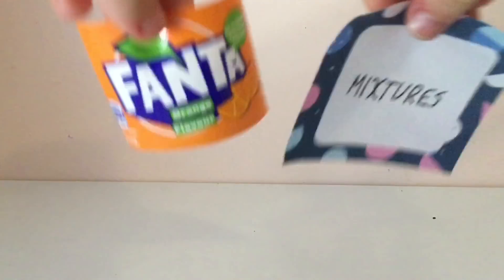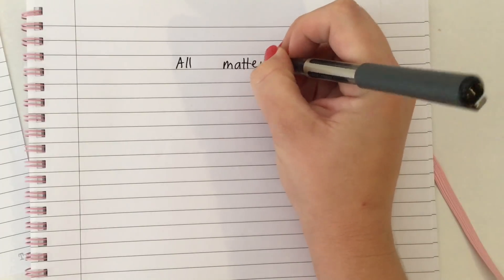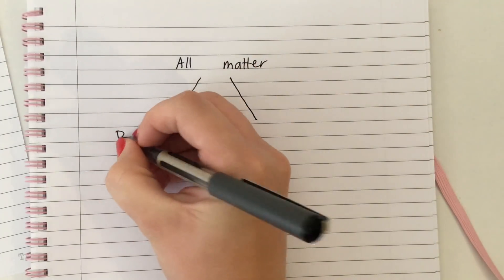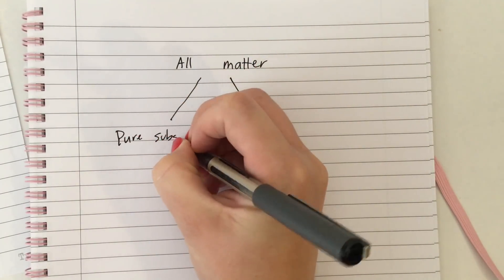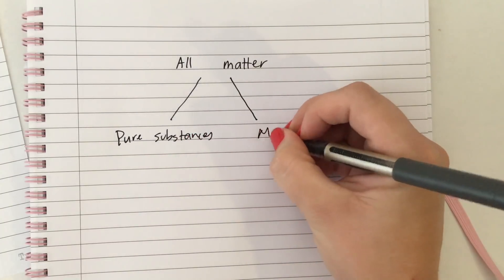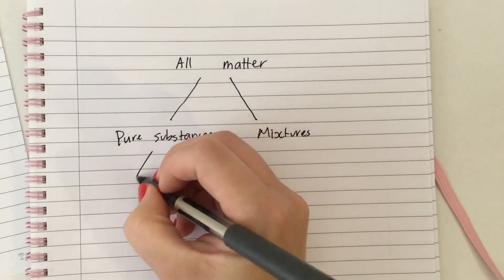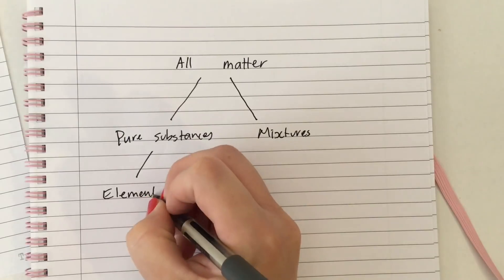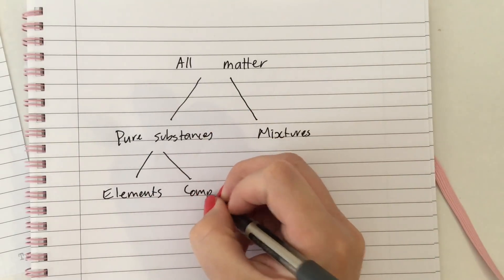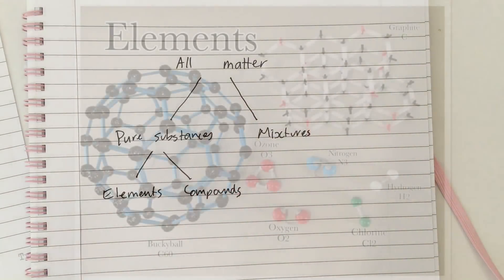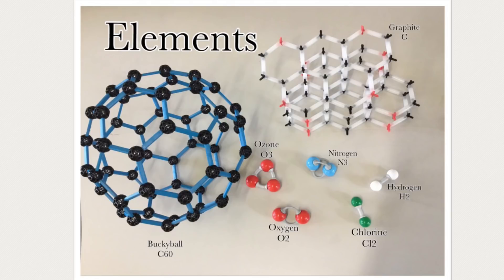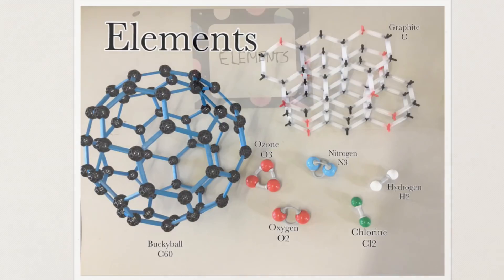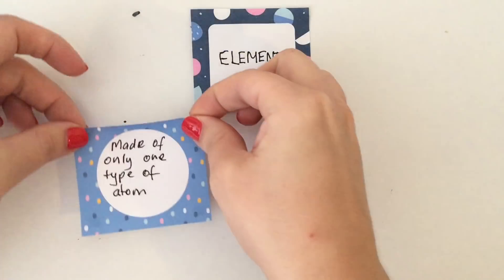All matter in the universe can be split up into two groups: those which are pure substances and those which are mixtures. Pure substances can further be divided into elements and into compounds.